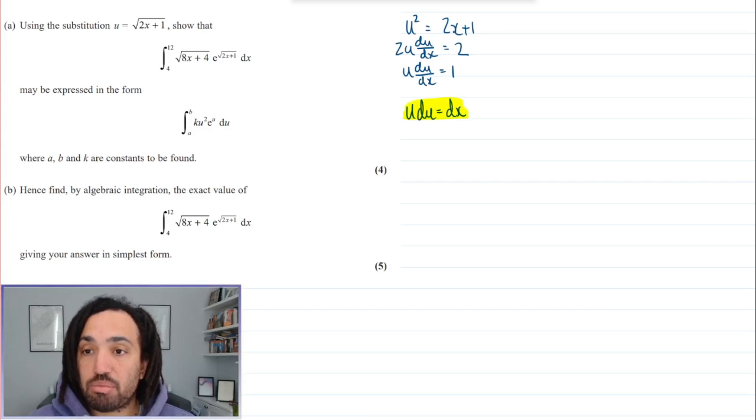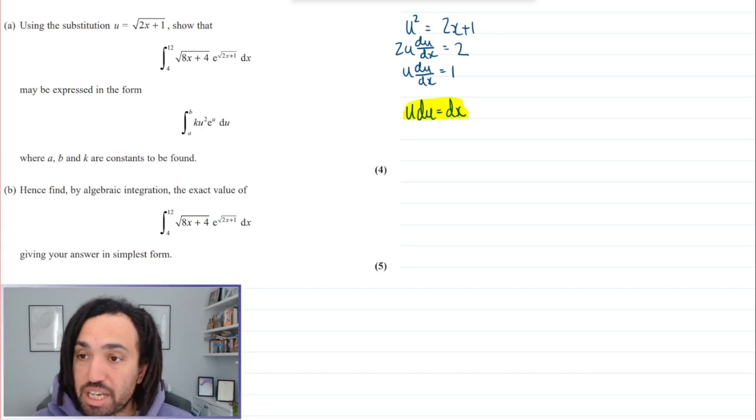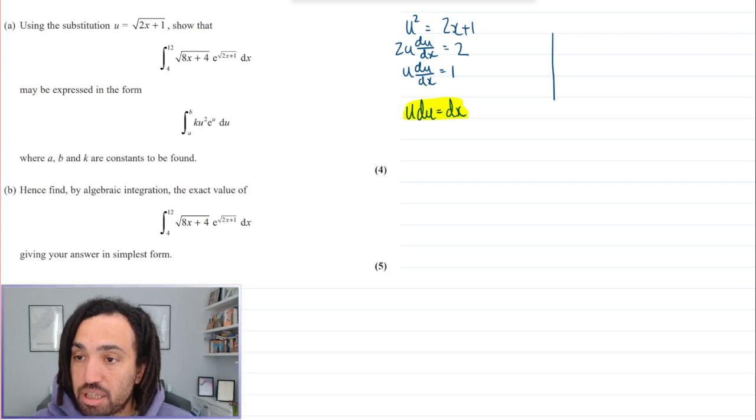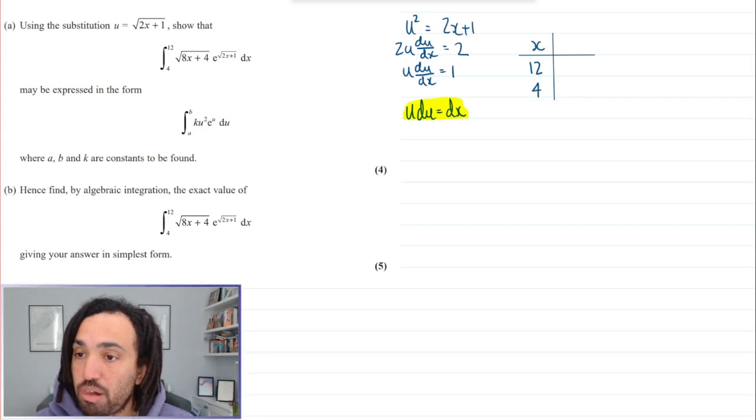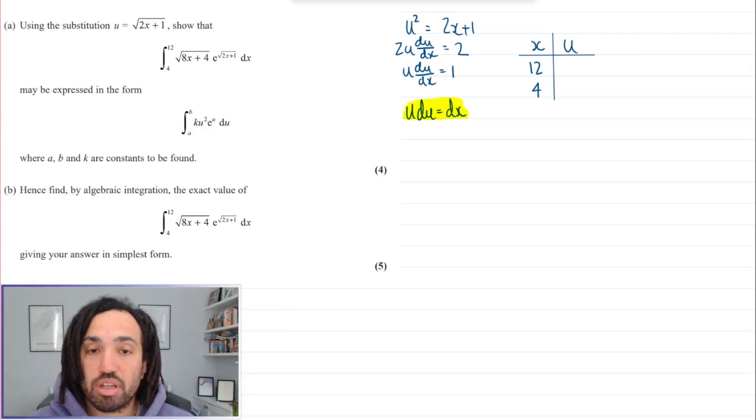Okay what else do I need to do? Well this is a definite integral so it means that we have limits here. So I'm just going to draw a little table up here and I'm going to say that we have x inputs of 12 and 4. So what are the corresponding u inputs? Well let's just substitute them into our substitution.